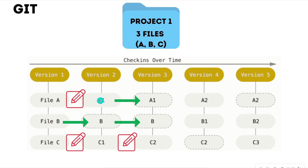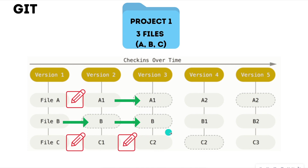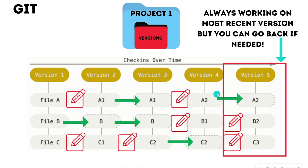In version three, you didn't change A1, so it just got pulled over. You didn't change file B, so that got pulled over too. And you made some edits to C1, so now it creates C2. If you were to call back version three, you would get files A1, B, and C2. This happens across all versions — you're always going to be working on the most recent version, but if you need to go back, you can go back to any of these versions. That's the beauty of version control. Inside the project one folder, you're going to have Git checkpoints, a log, and commits that let you go back to a previous point in time.